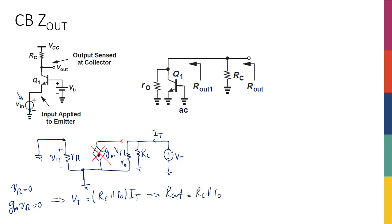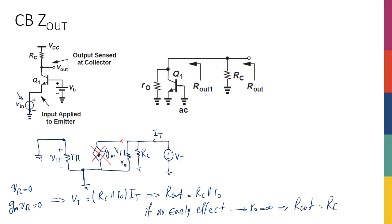Therefore, R_out is going to be RC in parallel with R_O. If there is no early effect, then R_O would be infinity, and therefore R_out would just be RC. So nothing new here, nothing surprising — everything is pretty much similar to what we had with common emitter amplifiers.